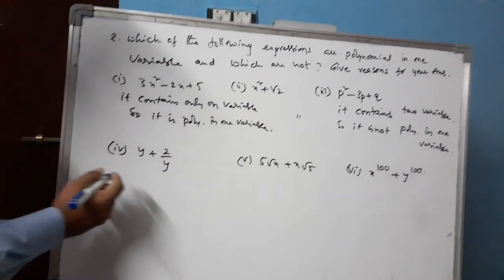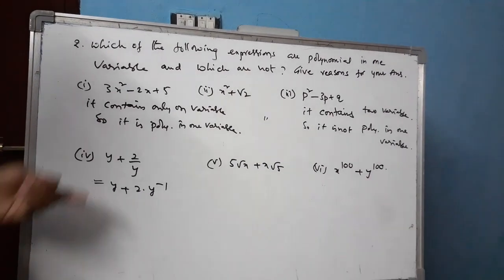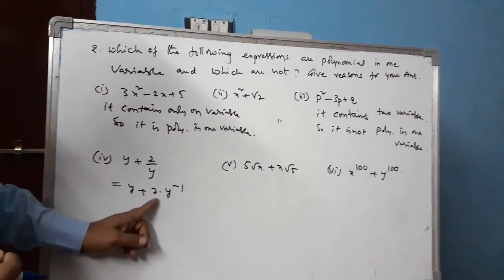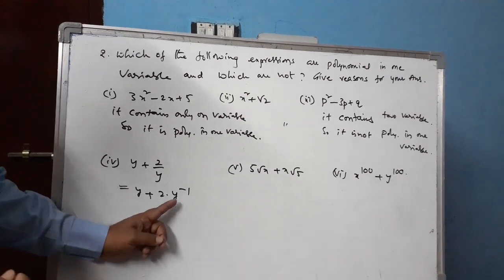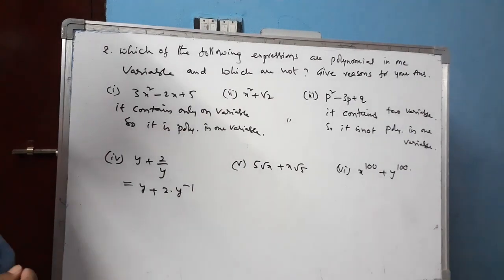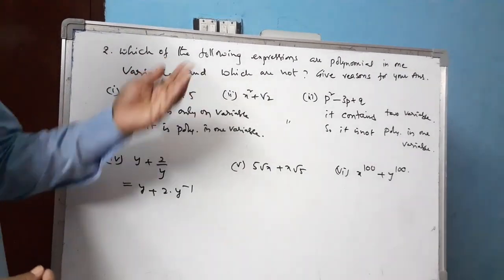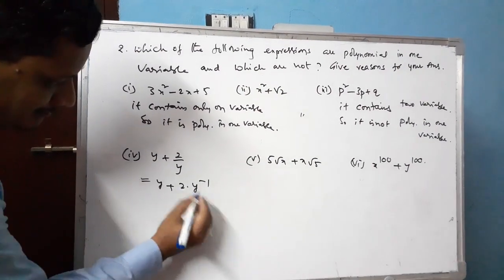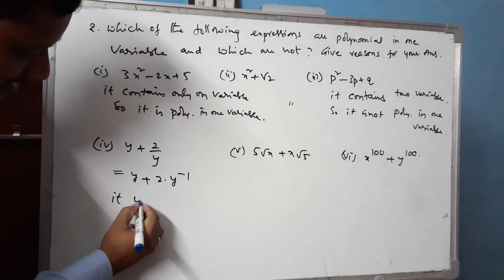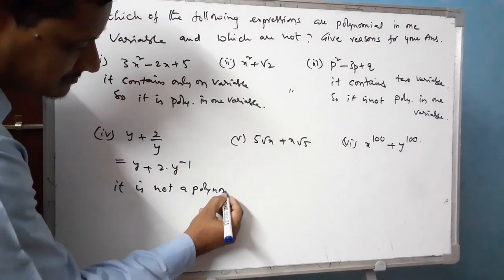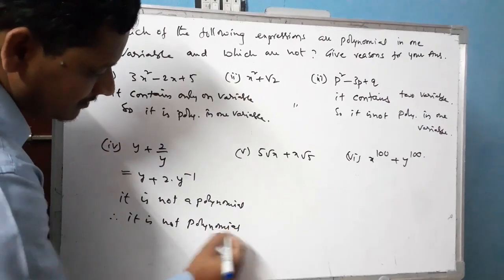Fourth expression: y plus 2 divided by y, which can be written as y plus 2 times y to the power of minus 1. The coefficients 1 and 2 are real numbers. However, the power of y to the power of minus 1 is negative 1, which is a negative number. Therefore it is not a polynomial, and hence not a polynomial in one variable.